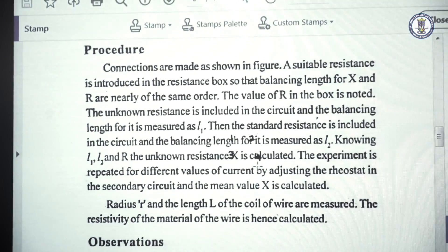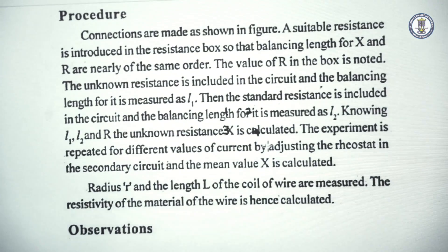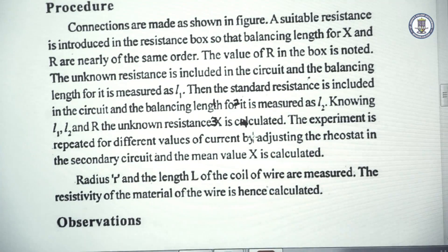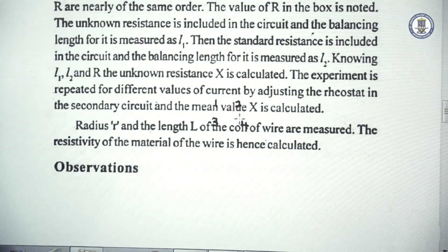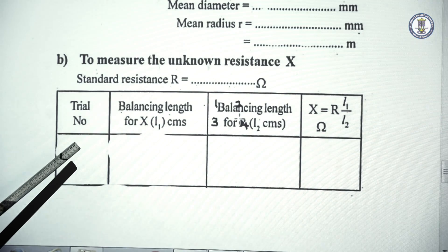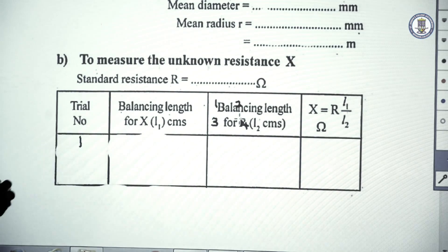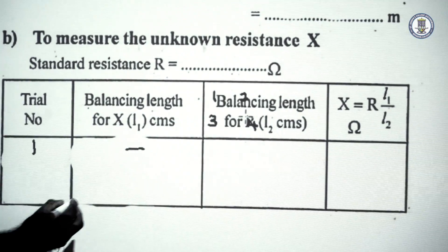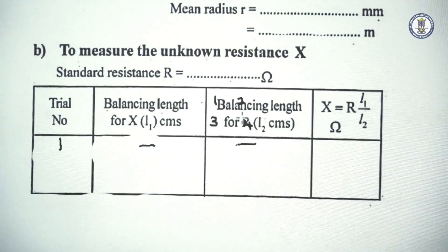In the procedure, connections are made and using the six-way key, resistance x is included and the corresponding balance length l1 is determined. Then it is switched to resistance r and the corresponding balance length l2 is determined. For each trial at a particular position of the rheostat, l1 and l2 are recorded, and from that we calculate x equal to r times l1 by l2.